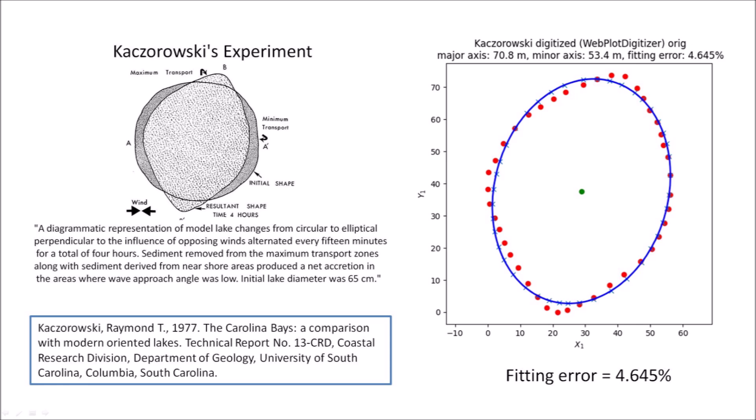The image from Kaczorowski's 1977 thesis where he claimed that the model leg changed from circular to elliptical was digitized using Webplot Digitizer. The fitting error was 4.645%, which is much higher than the fitting errors for the Carolina bays. In general, Carolina bays have fitting errors of less than 3%.